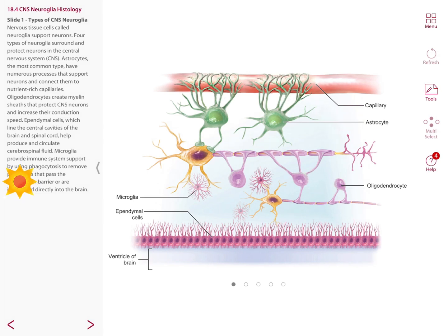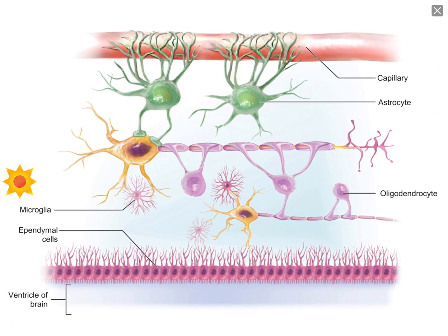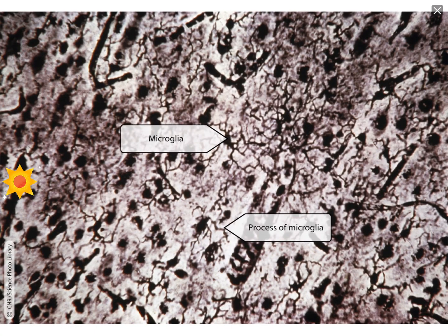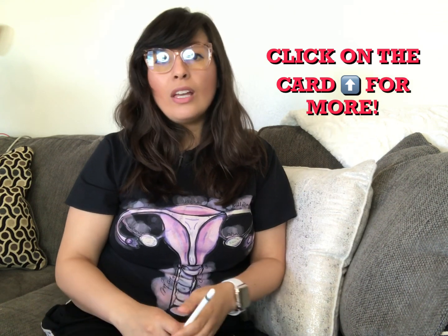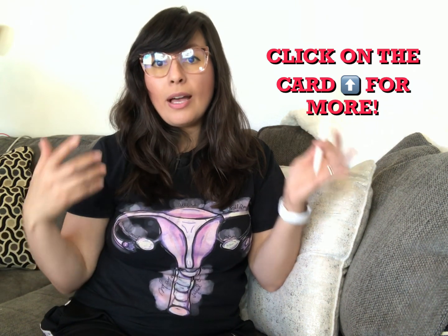The nervous system also has other cells called neuroglia, which support our neurons. These cells are not electrically excitable and make up about half the volume of the nervous system. They can multiply and divide, and there are six kinds in total — four in the CNS and two in the PNS. Examples include astrocytes, oligodendrocytes, microglia, and ependymal cells. For more information on this topic, click on the card at the top of this video.